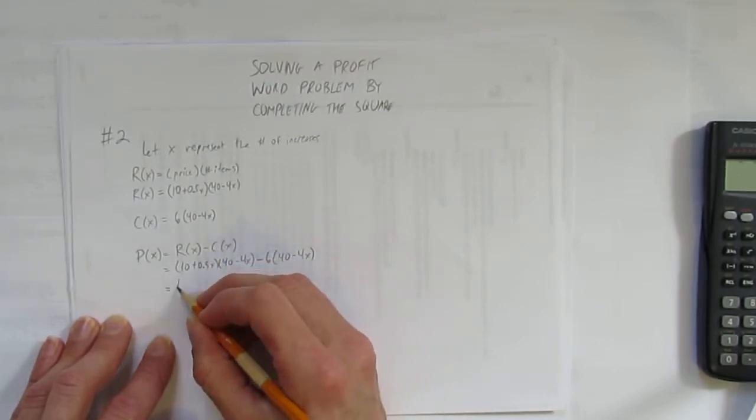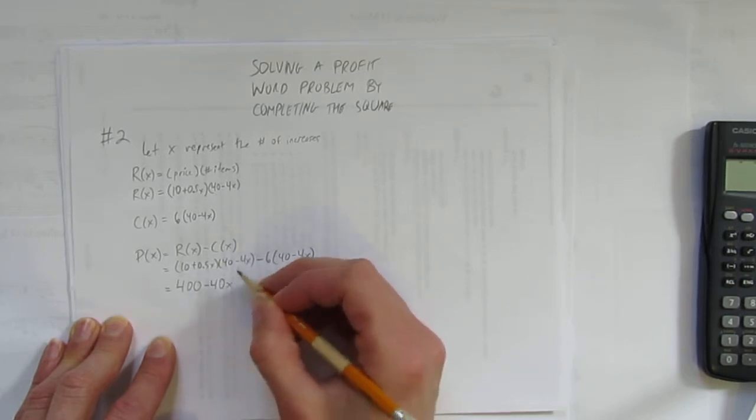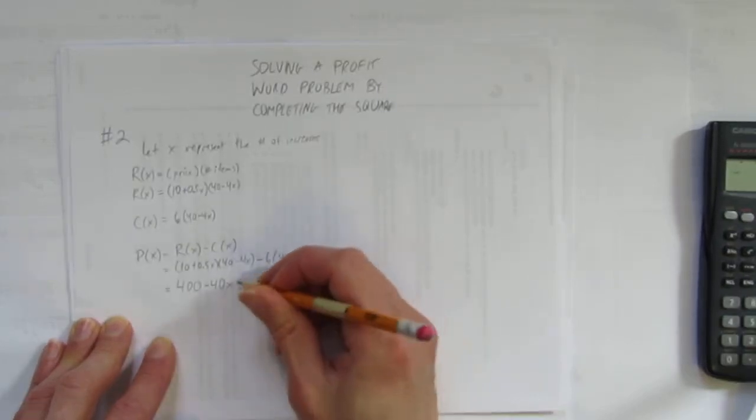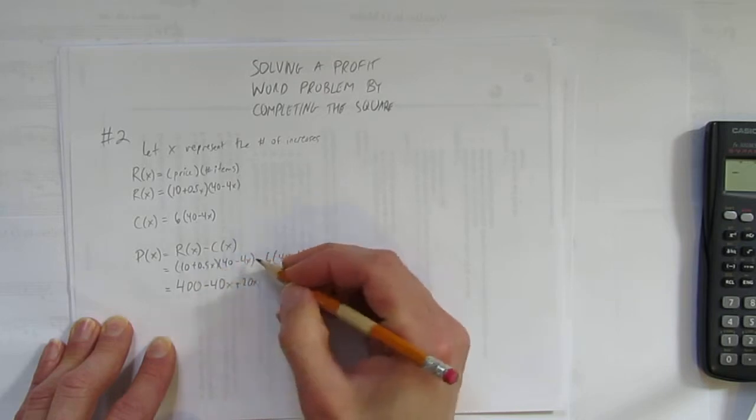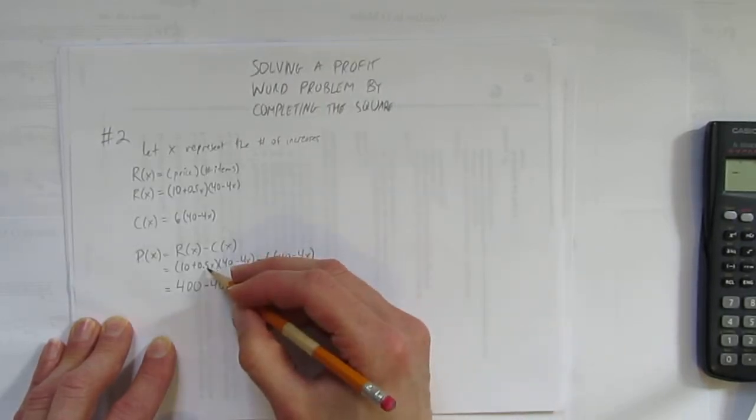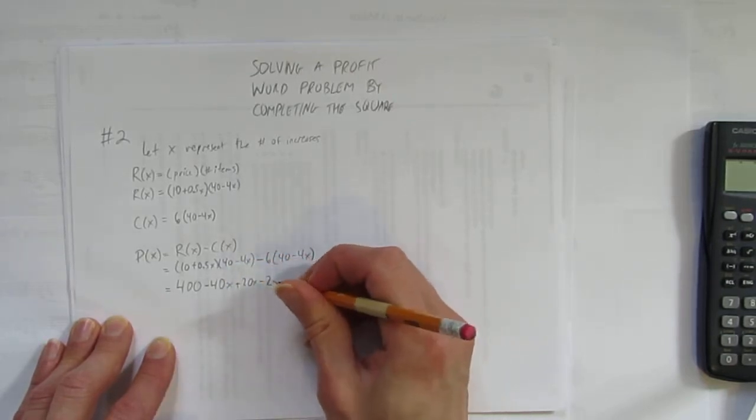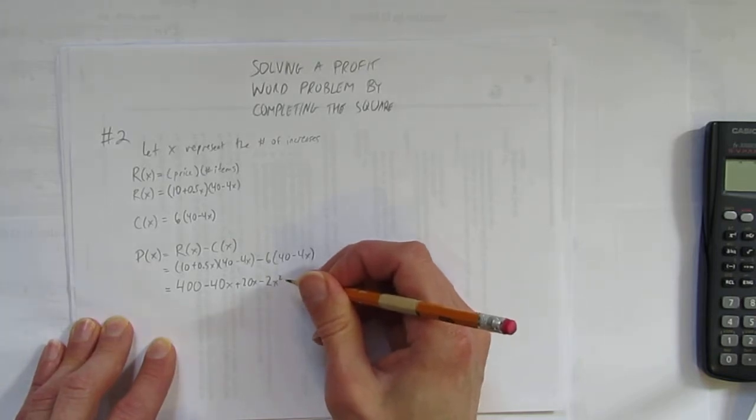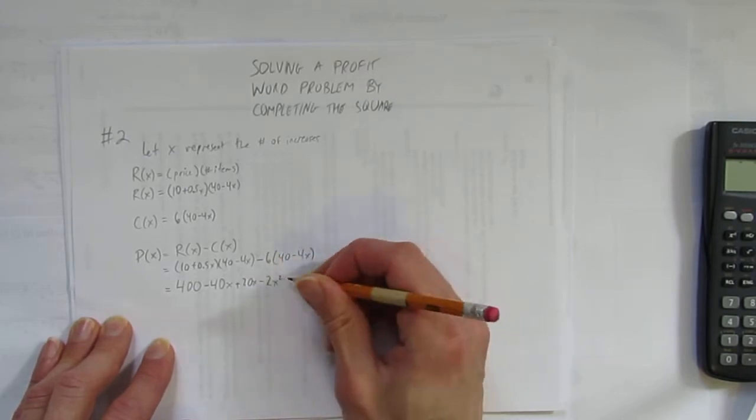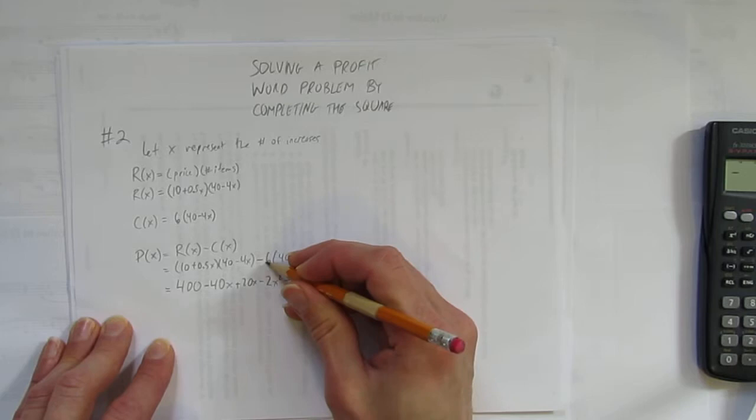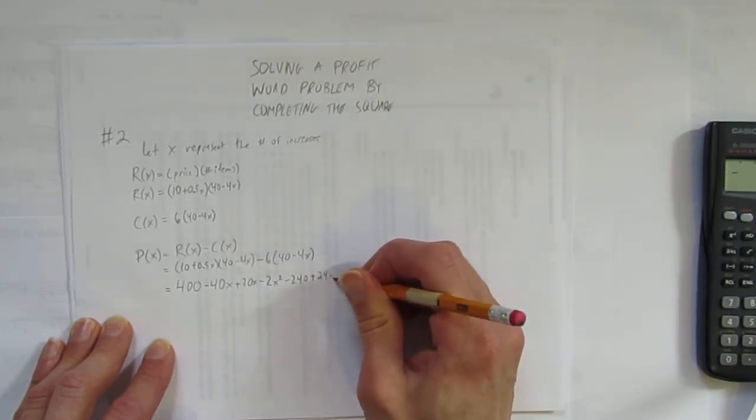10 times 40, 400. 10 times negative 4x is negative 40x. Now 0.5 times 40, that's half of 40, that's plus 20x. And 0.5 times negative 4, again, feel free to use your calculator. I know timesing by 0.5 is just halving, so I get negative 2 and x times x, negative 2x squared. Don't forget to do this cost part and rainbow in the 6 with the minus. Minus 6 times 40 is minus 240. And minus 6 times minus 4x, a minus times a minus is a plus, so I get plus 24x.